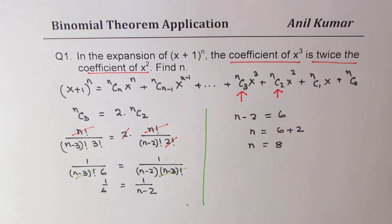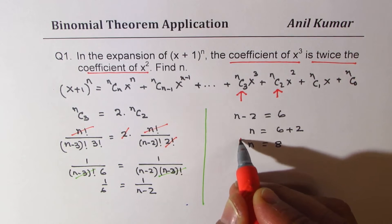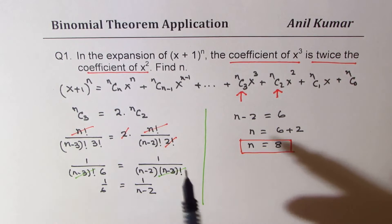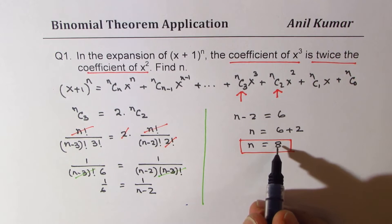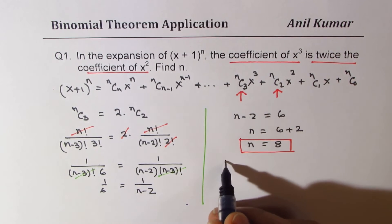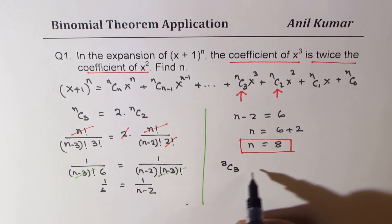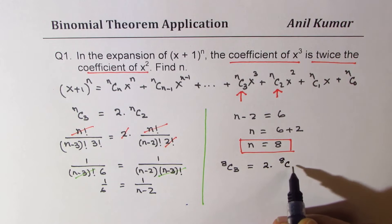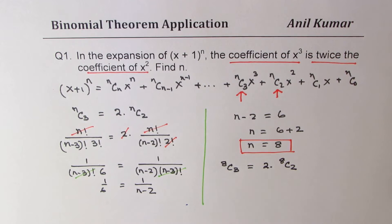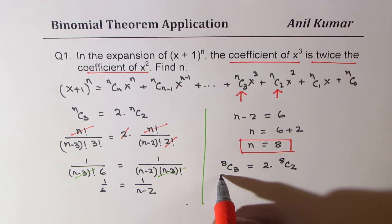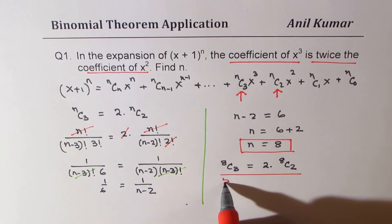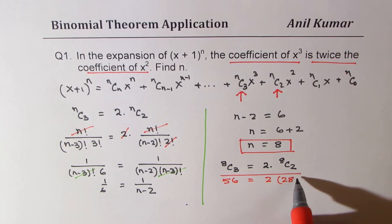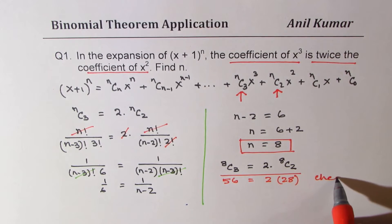So we get n = 8. You can verify this with a calculator: if n is 8, then 8C3 is 56 and 8C2 is 28, and indeed 56 = 2 × 28. So that is a check for your answer.